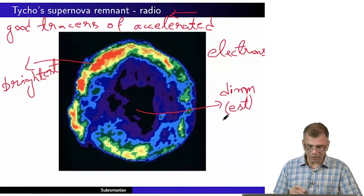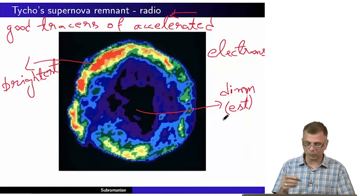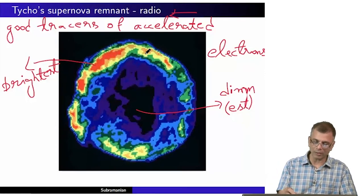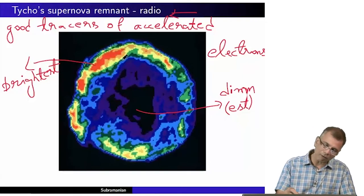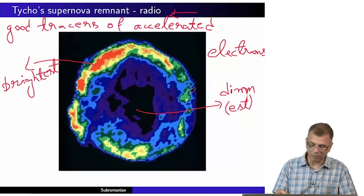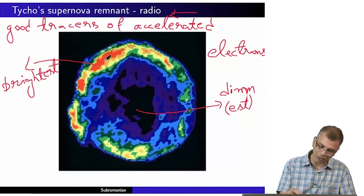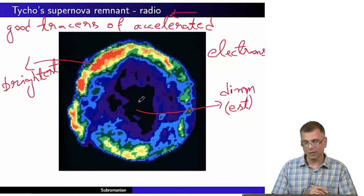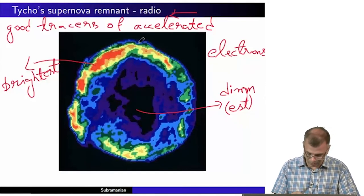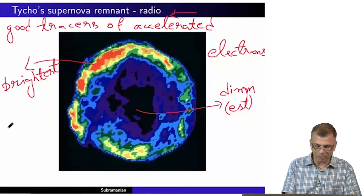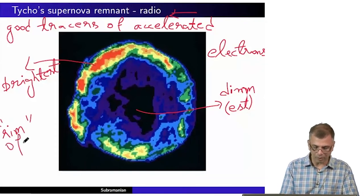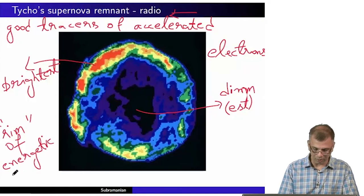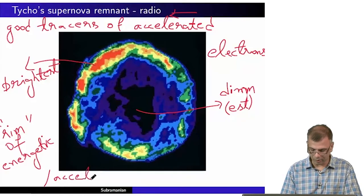What this picture is telling you is that the largest concentration of accelerated electrons is to be found roughly on the rim. It's not terribly spherically symmetric — the green is somewhere between red and blue — so the concentration of accelerated electrons is somewhat lower here than at the rim, but still definitely higher than in the center. What this picture is essentially showing you is a rim of energetic or accelerated electrons.